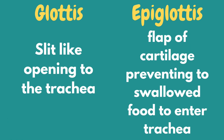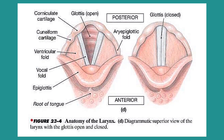Another special part of the respiratory system is the presence of the glottis and epiglottis. The glottis opens into the trachea and is responsible for the production of sound, while the epiglottis is a cartilaginous flap on top of the glottis that prevents food from entering the trachea. This is also the reason why we are not allowed to talk while eating, because food might enter our trachea and cause choking. To prevent choking, our body usually performs coughing to expel food that enters the trachea.